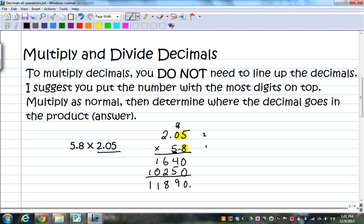And my answer, then, is 11.89, or 11 and 89 hundredths. I didn't write the 0, because it's not necessary. If you want to, go right ahead, if that makes you happy. Let's move on to division.